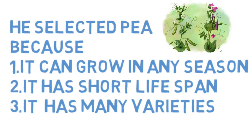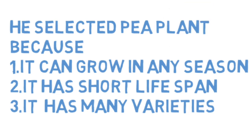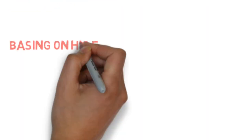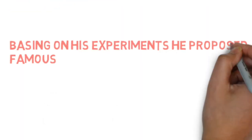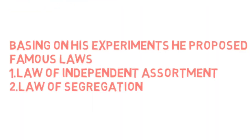That is, it can grow very fast. And also it has many varieties like tall plant, dwarf plant, round-seeded plant, wrinkled-seeded plant, yellow pod, and green pod. Different varieties of pea plants are available. Based on the experiments which he conducted on the pea plant,